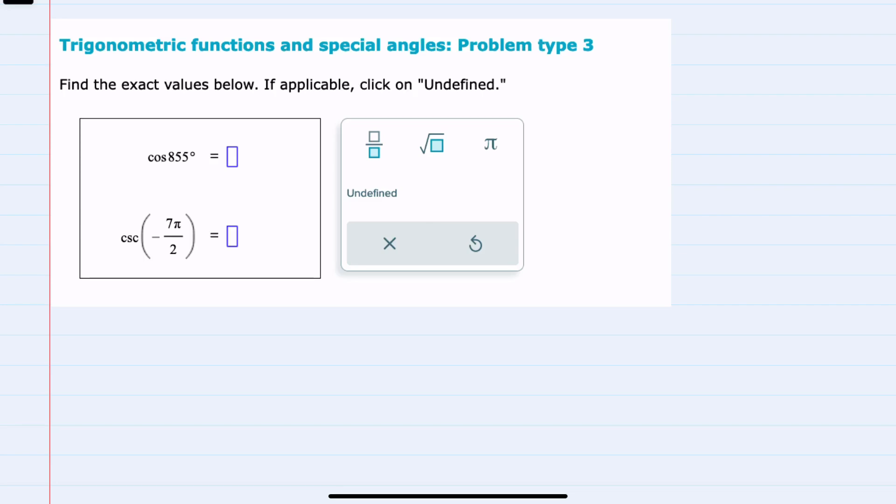In this video I'll be helping you with the ALEKS problem type called Trigonometric Functions and Special Angles Problem Type 3. We're asked to find the exact values for the trig functions listed below, with the first being the cosine of 855 degrees.